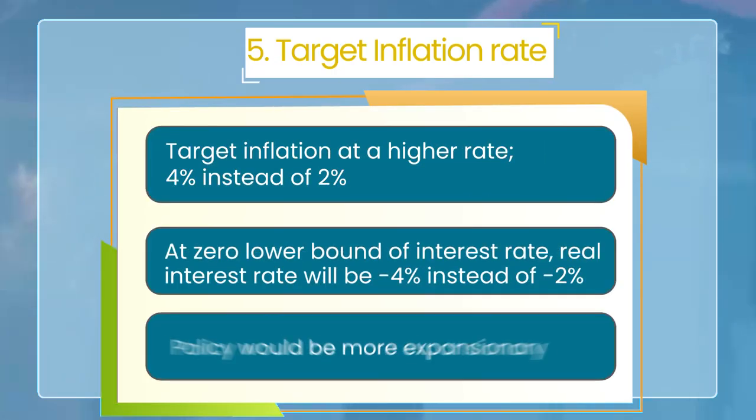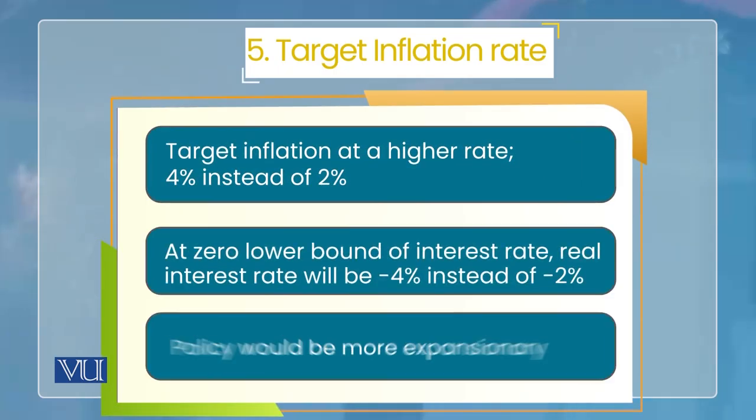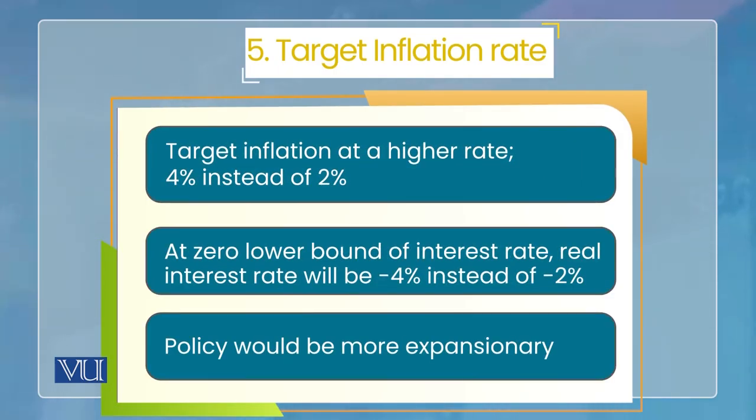The fifth lesson, and the first in this lecture, is that the target inflation rate should be increased. Regarding the inflation targeting strategy, the current inflation rate target is 2%. This 2% target is a suggestion that emerged from the global financial crisis, where the average rate discussed is 4%.